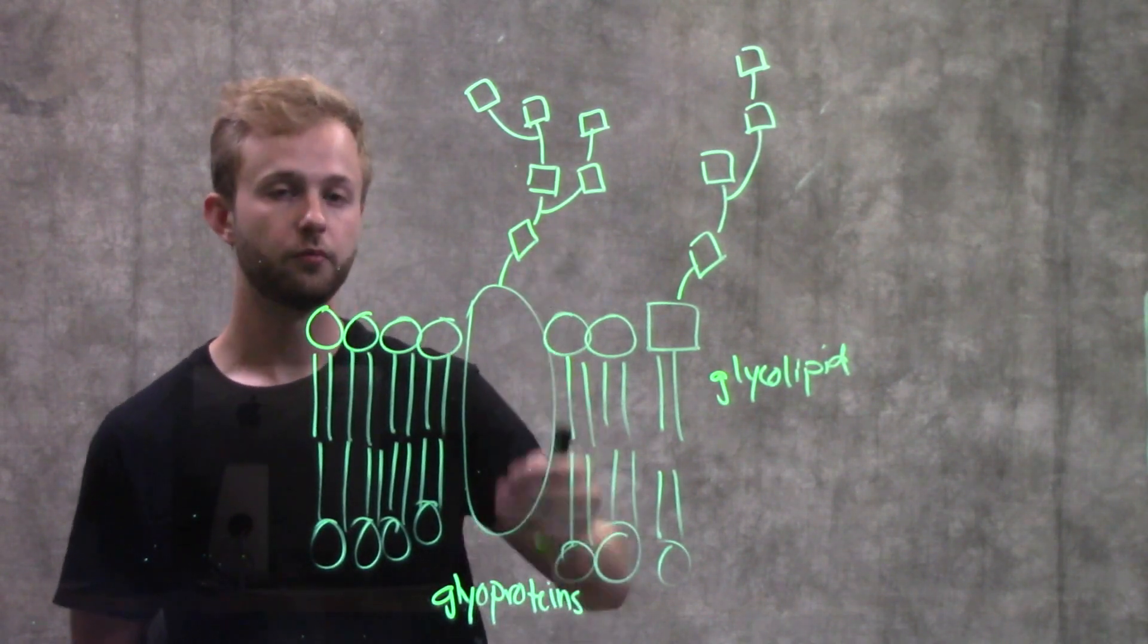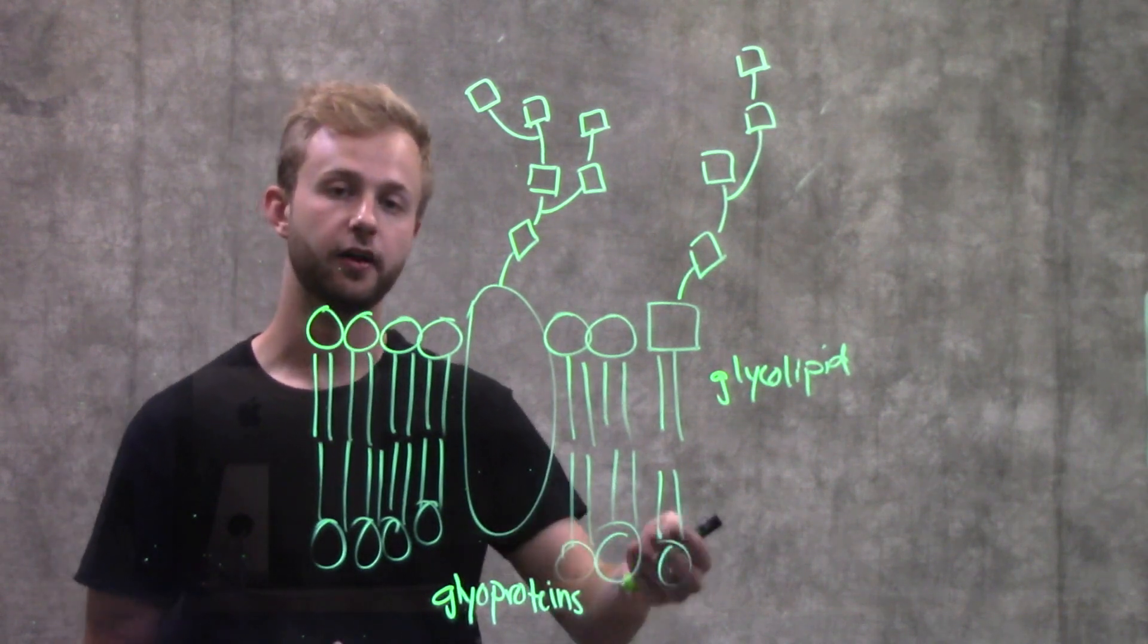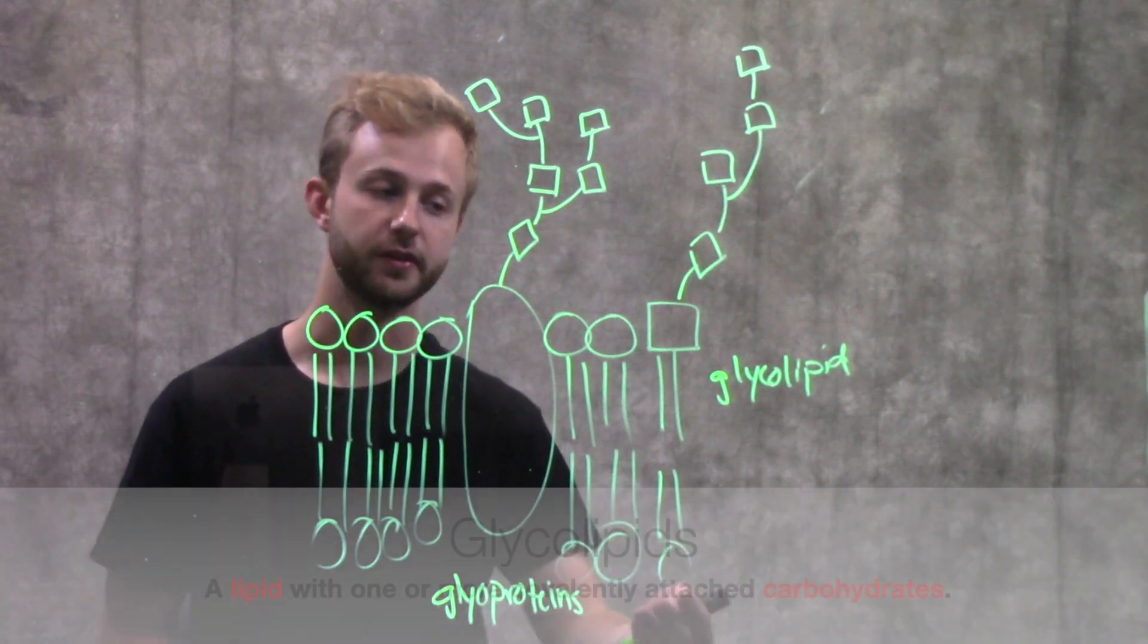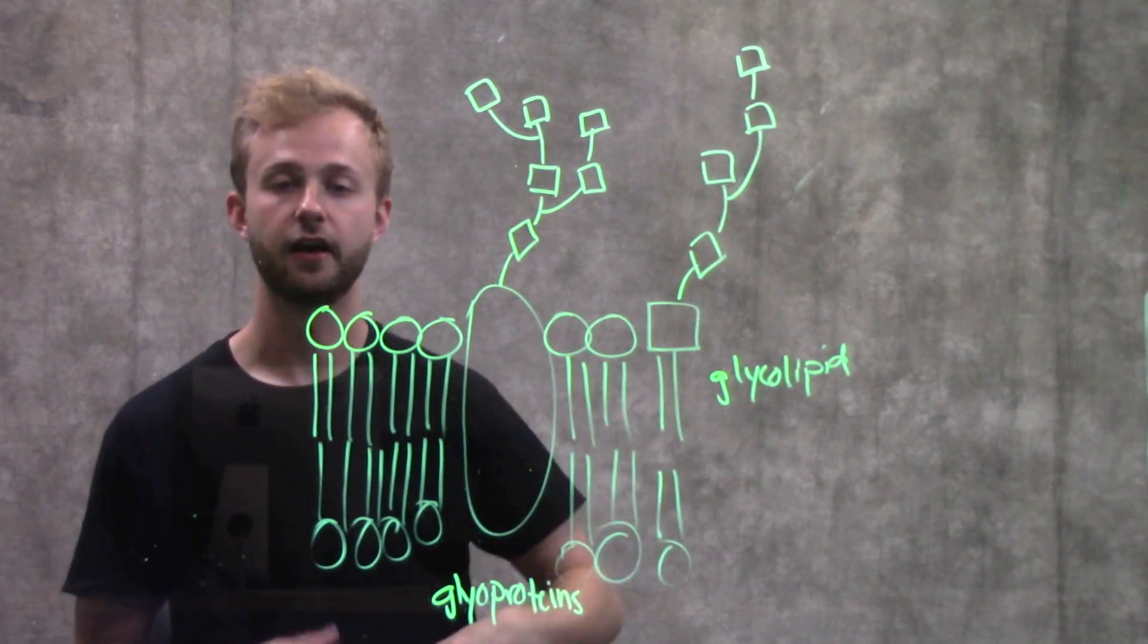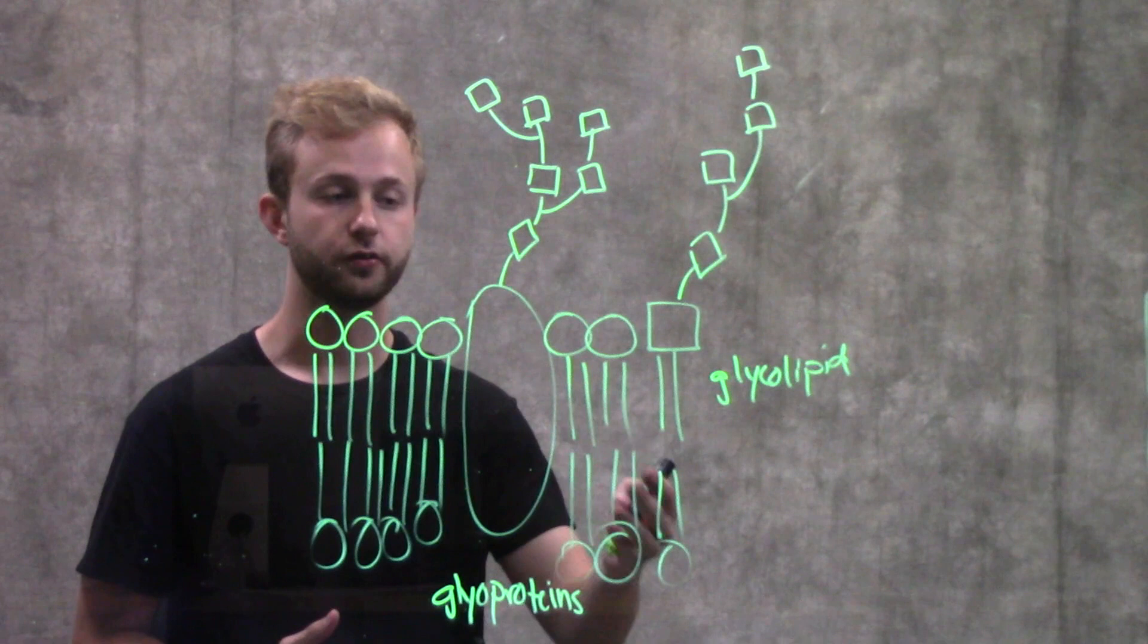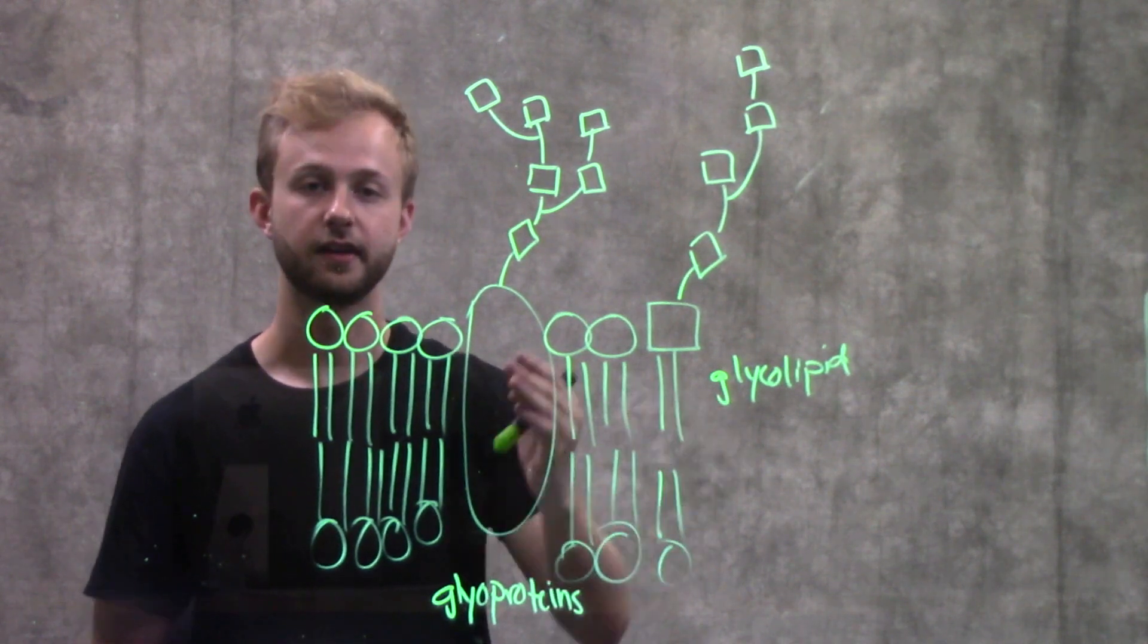This is a lot more common than our second type of membrane carbohydrate, which are glycolipids. Similarly to the glycoproteins, we have a branched chain of carbohydrates that is covalently linked this time to a lipid instead of to a protein.